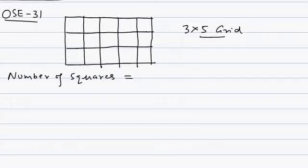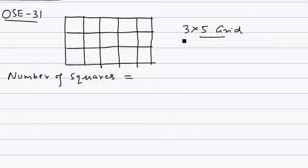This is objective solved example question number 31. We have to count how many squares and how many rectangles are there in a given grid of size 9 by 6. I'm taking an example of 3 by 5 so that you can understand the concept, and once understood you can apply the concept to the actual question. Let's see how we count rectangles.